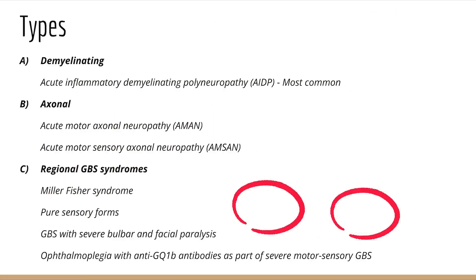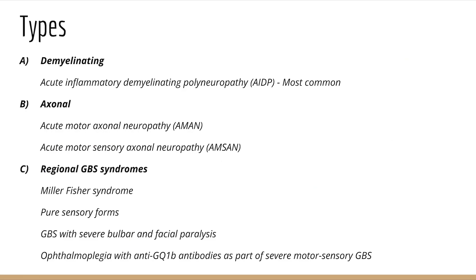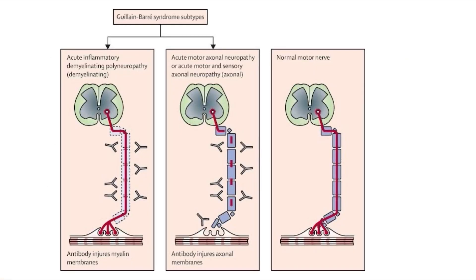The types of GBS are important as they are potential exam questions. GBS can be broadly divided into demyelinating, axonal, and regional GBS syndromes. The demyelinating type is Acute Inflammatory Demyelinating Polyneuropathy (AIDP), which is also the most common type. Axonal types include Acute Motor Axonal Neuropathy (AMAN) and Acute Motor Sensory Axonal Neuropathy (AMSAN). Under regional GBS syndromes, Miller Fisher Syndrome is important, along with pure sensory forms, GBS with severe bulbar and facial paralysis, and ophthalmoplegia with anti-GQ1b antibodies.